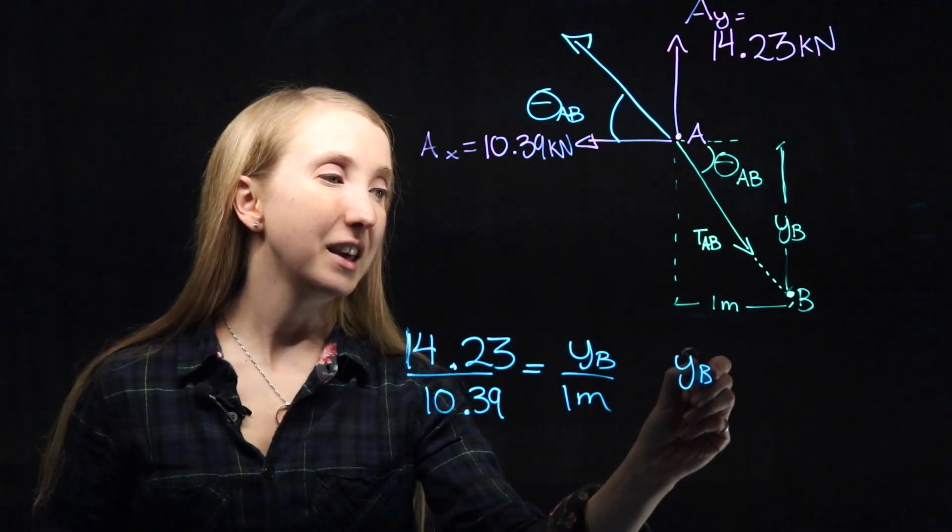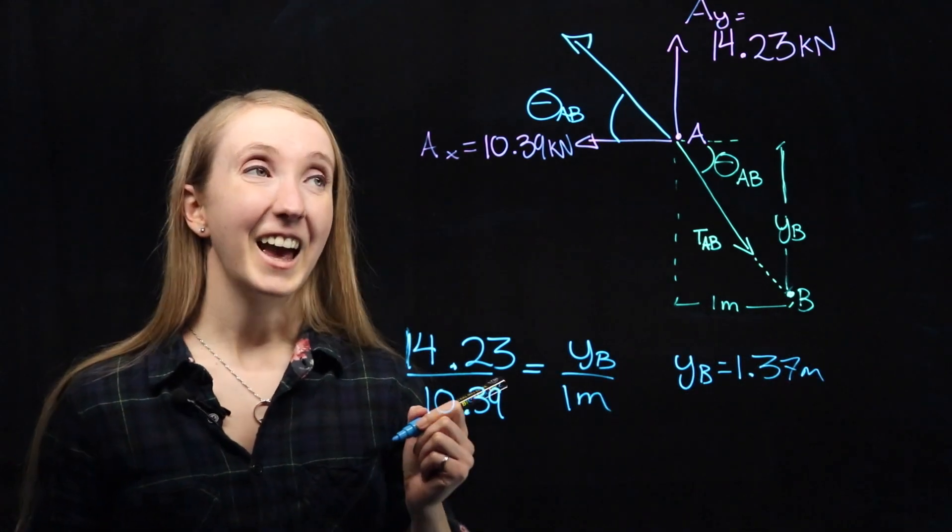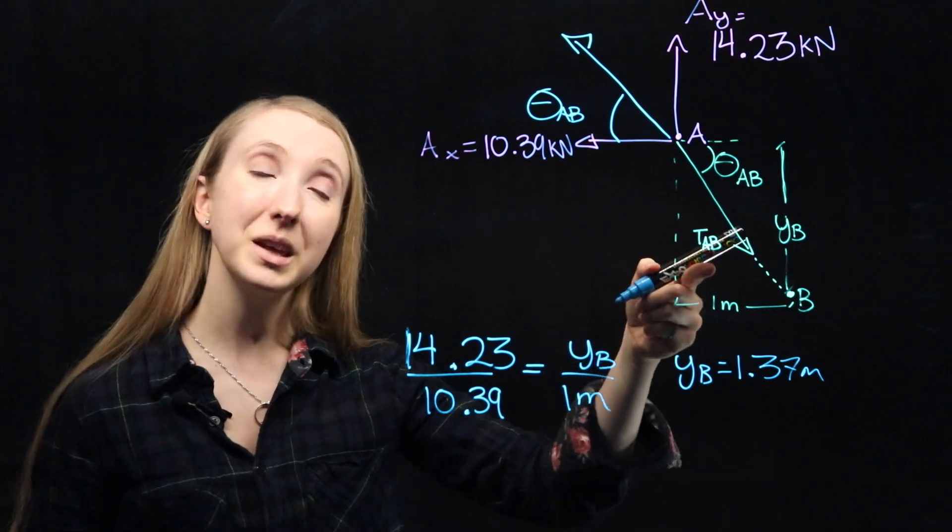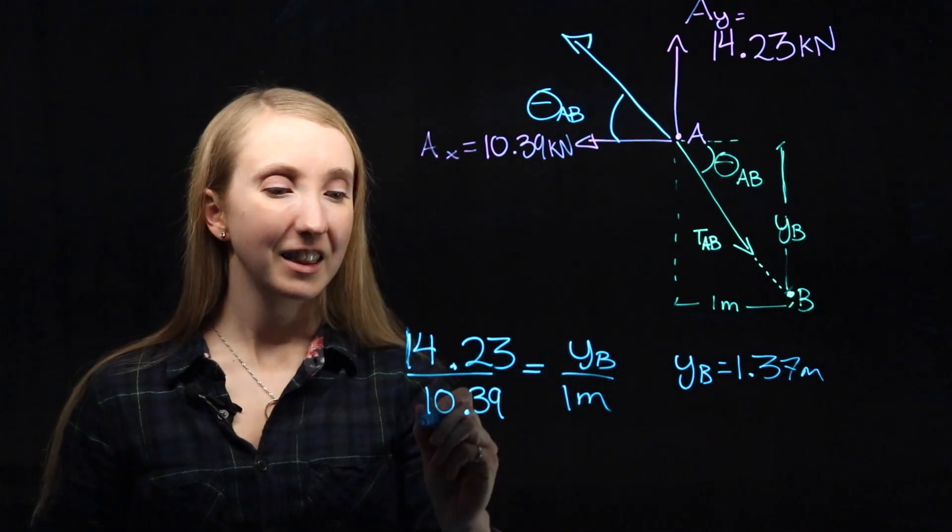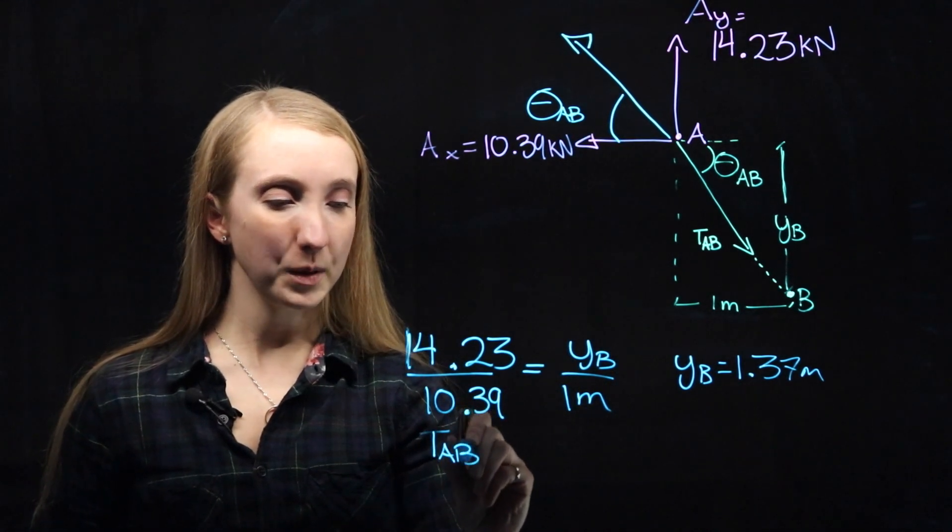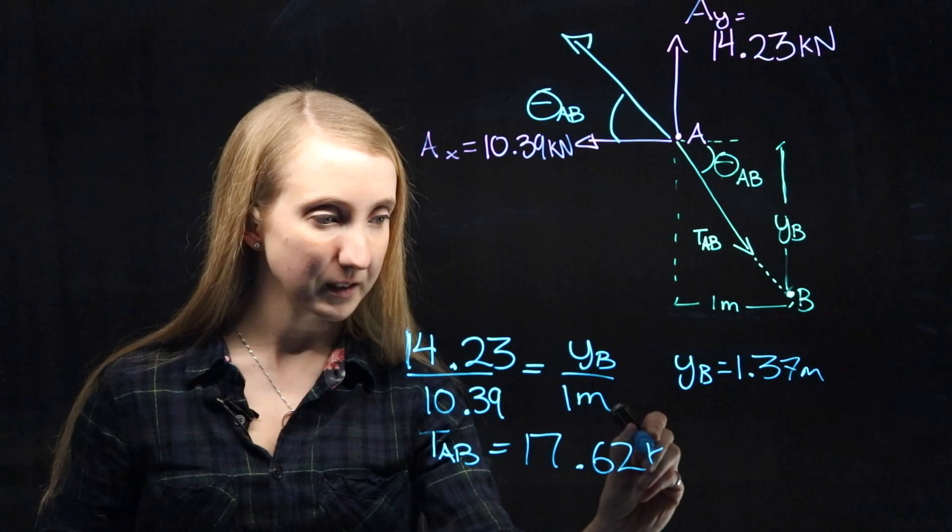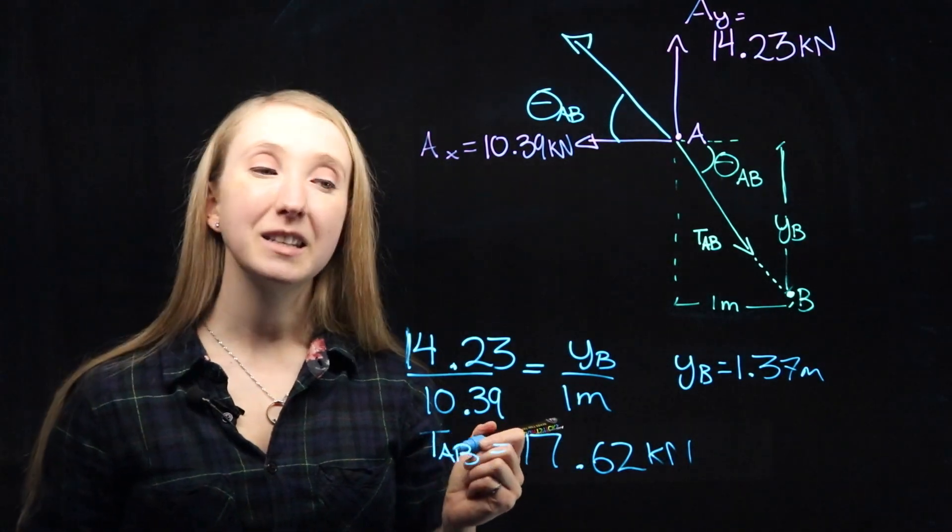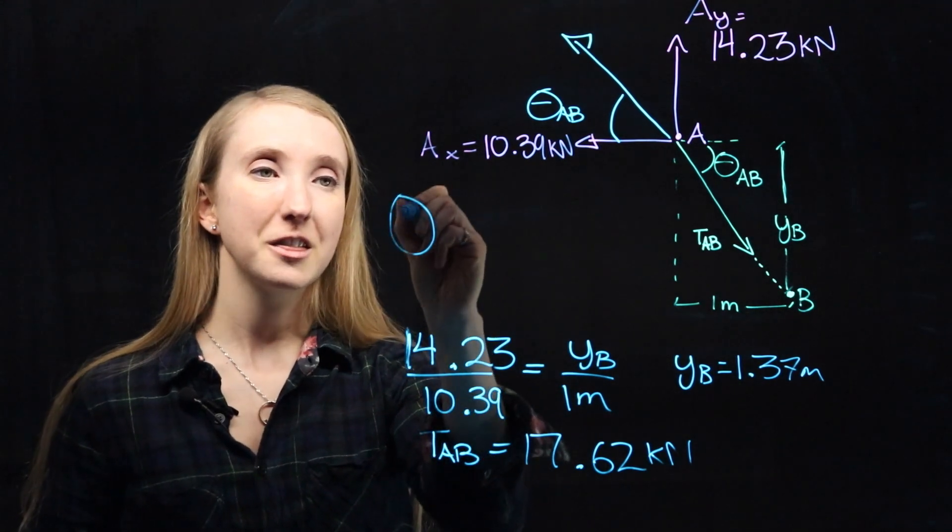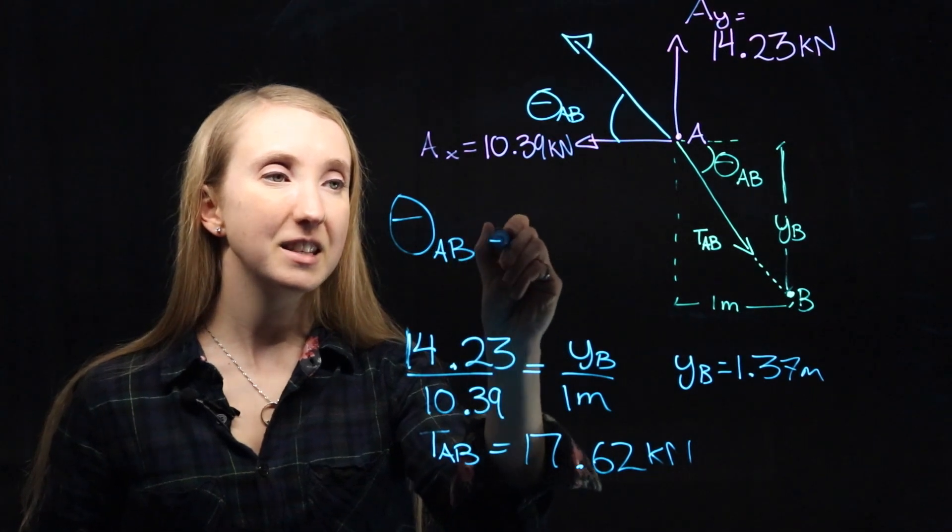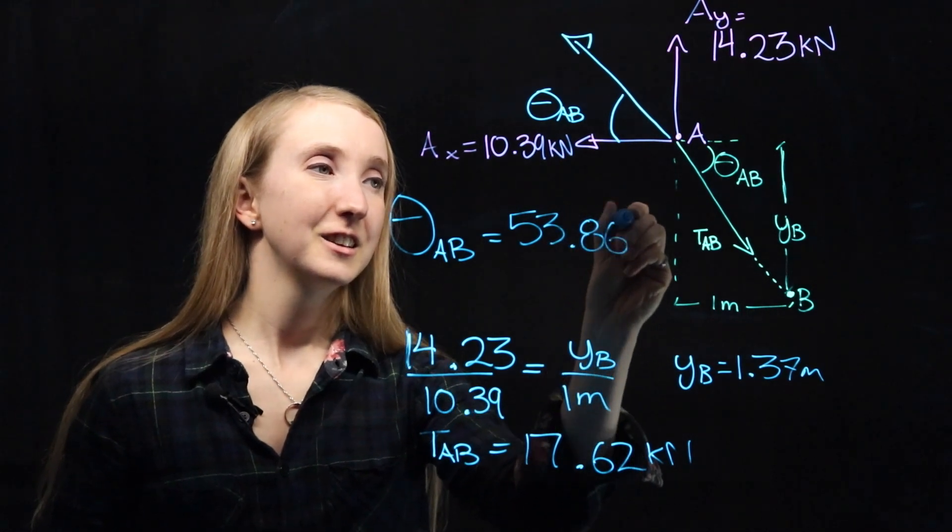Now you can solve for your YB directly, which gives you a YB of 1.37 meters. And you can solve for your TAB by doing Pythagoras, from your Ax and your Ay. That gives you a TAB of 17.62 kN. And you can take your Arctan of this ratio to help you solve for your theta. So your theta AB is equal to 53.86 degrees.